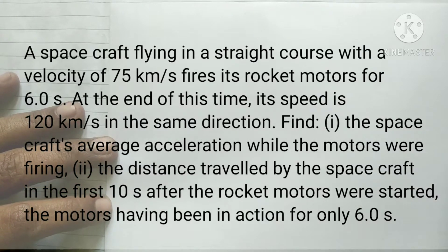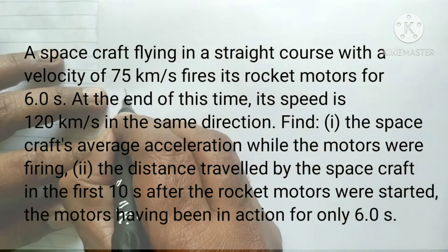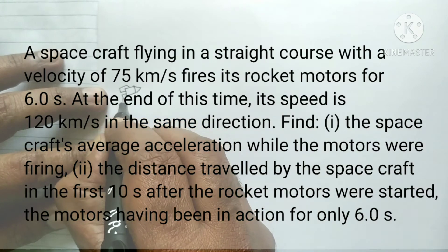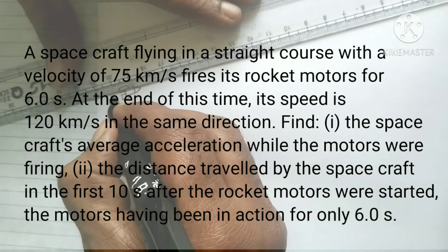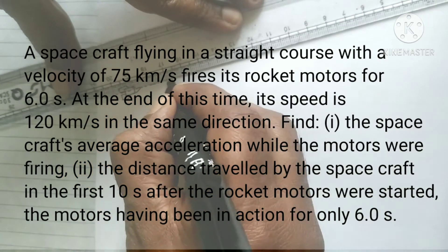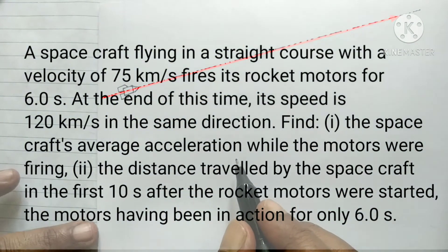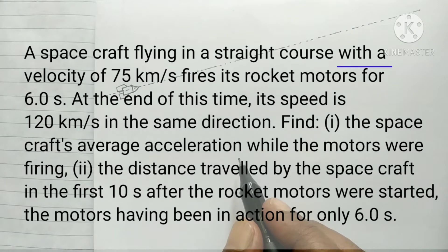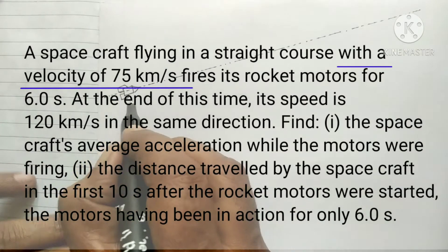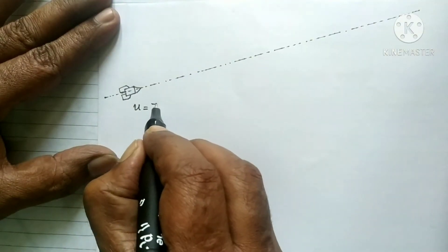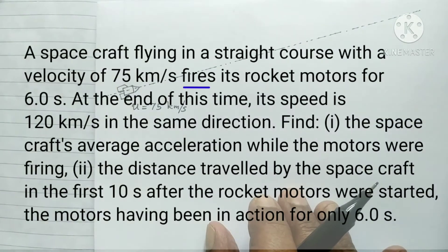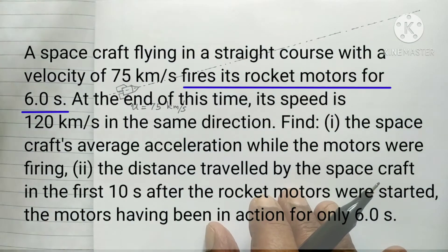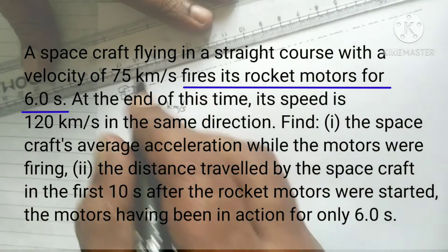Let us study the question. A spacecraft is flying in a straight course. It travels in a straight line with a velocity of 75 kilometers per second. When we observe the spacecraft initially, its velocity is 75 kilometers per second. The spacecraft fires its rocket motors for six seconds.